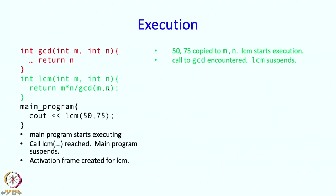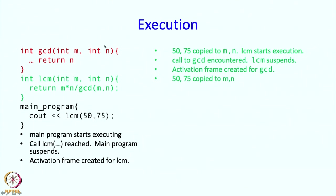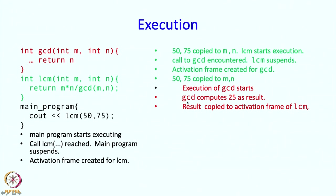Because of the GCD call, LCM is suspended. So now we have two things suspended: the main program and LCM. At this point the activation frame for GCD is created. The values 50 and 75 are copied to M and N in GCD's activation frame. GCD computes its result — the GCD of 50 and 75, which is 25 — and that result is copied back to LCM's activation frame.